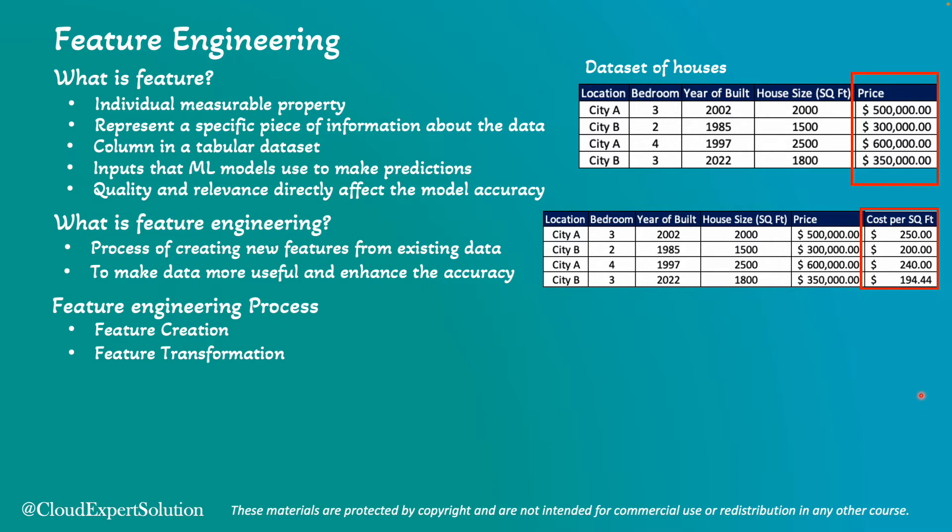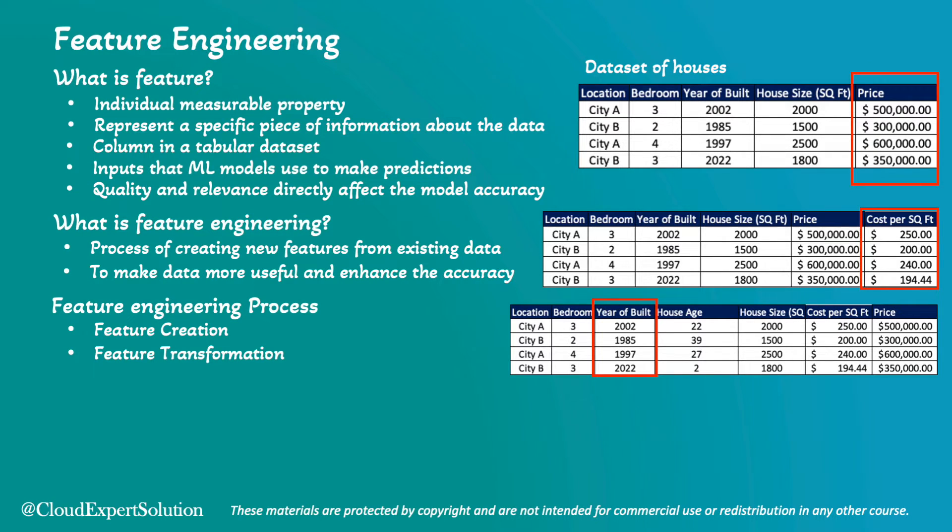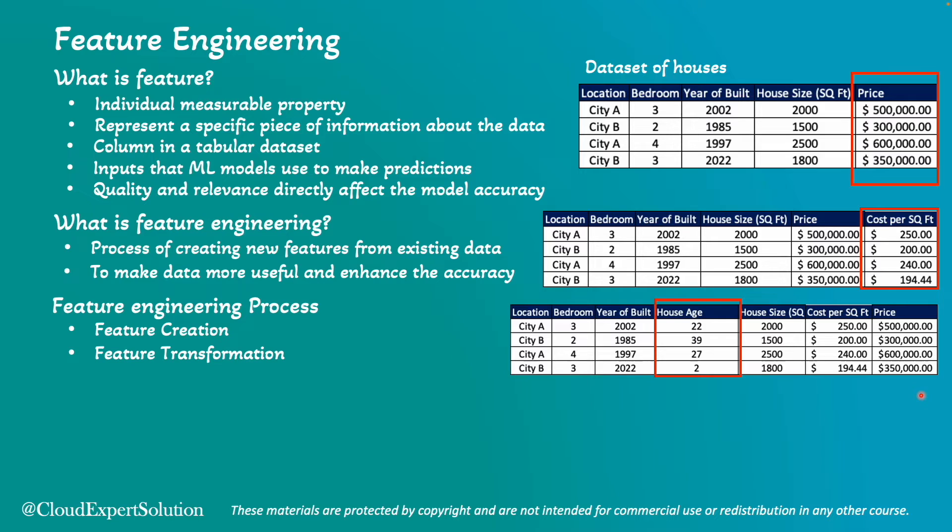The next technique is feature transformation. In our sample dataset, we have an existing feature called Year of Built. Year of Built has direct relation with house price. However, for the machine learning model, it can be confusing. And the ML model may not be able to relate the Year of Built with house price. That is why we can introduce house age. That means we can take our raw data year of built and transform it to house age. Using feature transformation, we can provide more intuitive understanding of the house's age, which can impact its price.